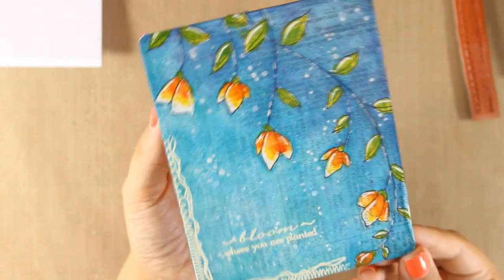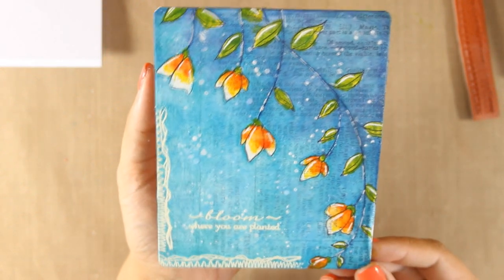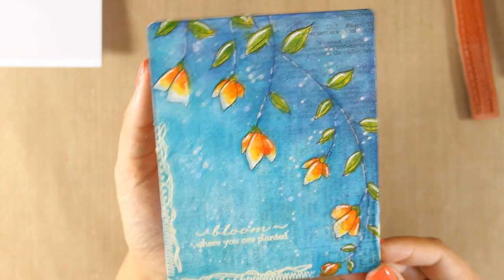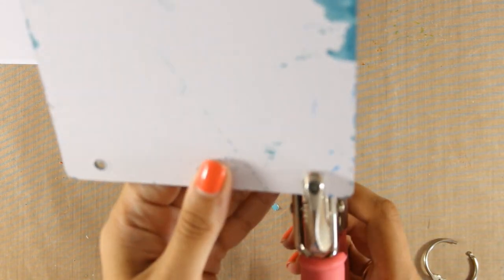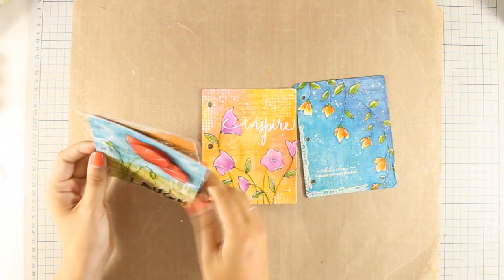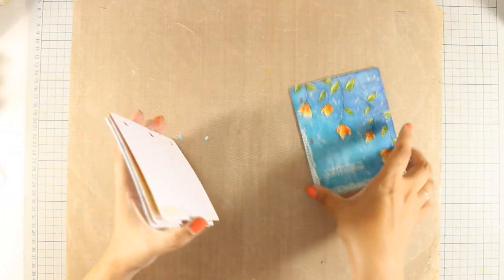Here is the final look of today's page. Now I am going to bring in my Cropadile and I am going to do the holes again so that I can assemble my mixed media flower journal. Now I have the holes there and I am going to use the rings to assemble it back again as it should be.